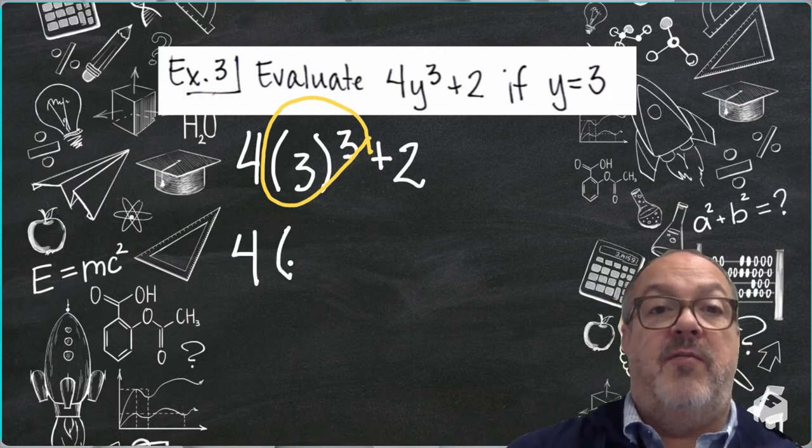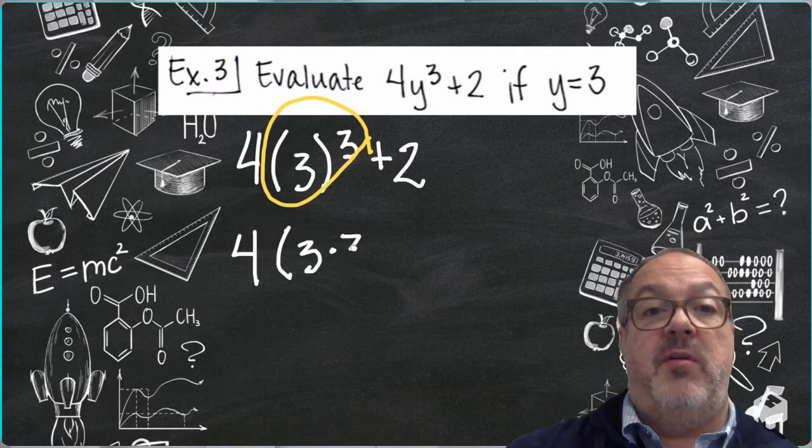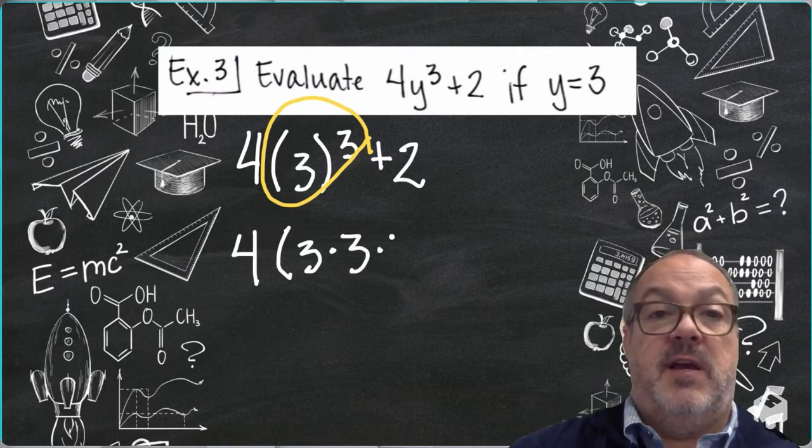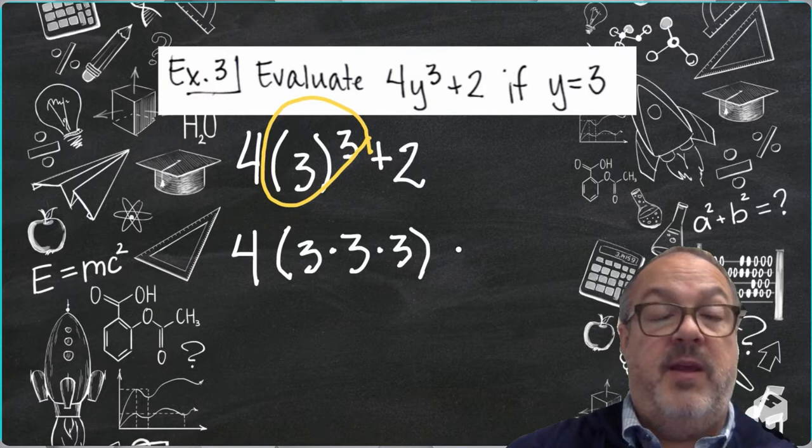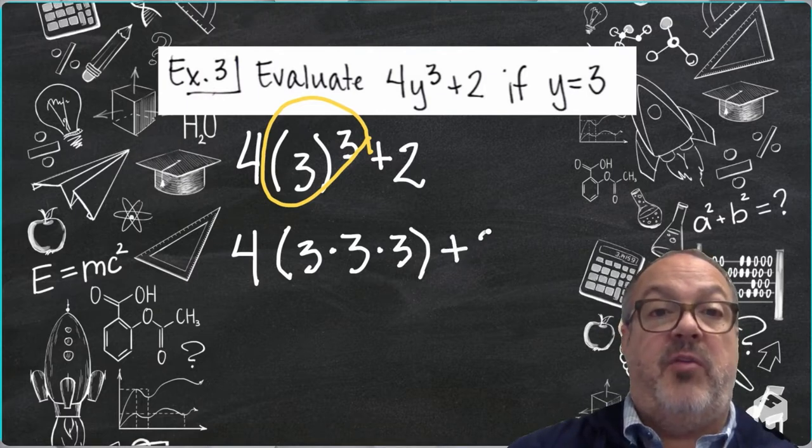So I'm going to rewrite it as 4 times 3 times 3 times 3. 3 times 3 times 3 is the same as 3 to the third power. Then I'm going to add 2 to that.